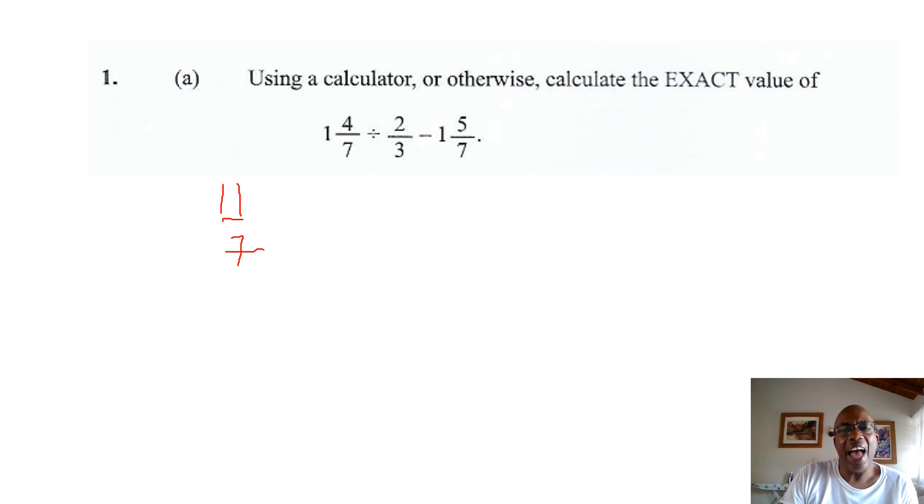You are dividing by 2 thirds. Now, in the Bournemouth rule, we know we must divide before we subtract. So, I have to divide 11 over 7 by 2 thirds. There is no need to convert because it is not a mixed number. So, when you divide by a fraction, you simply invert the divisor and multiply.